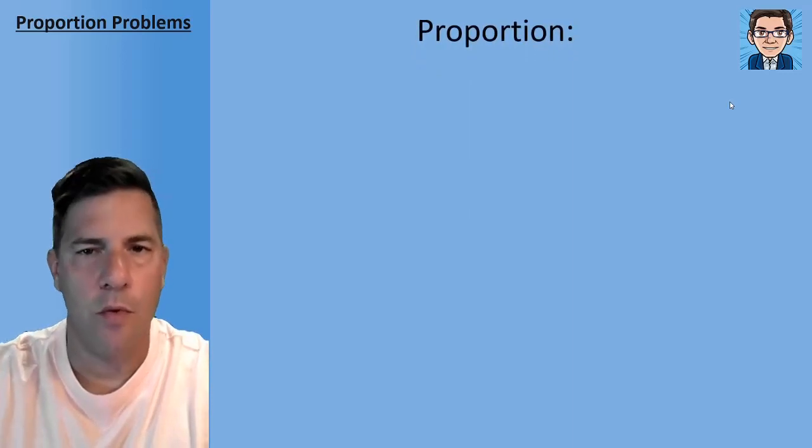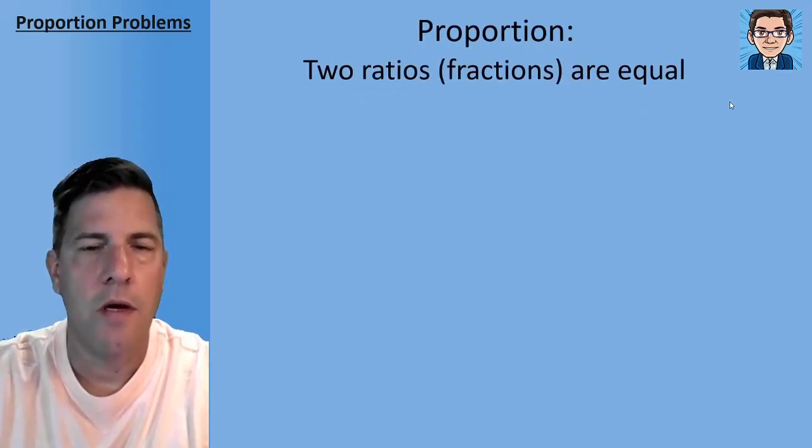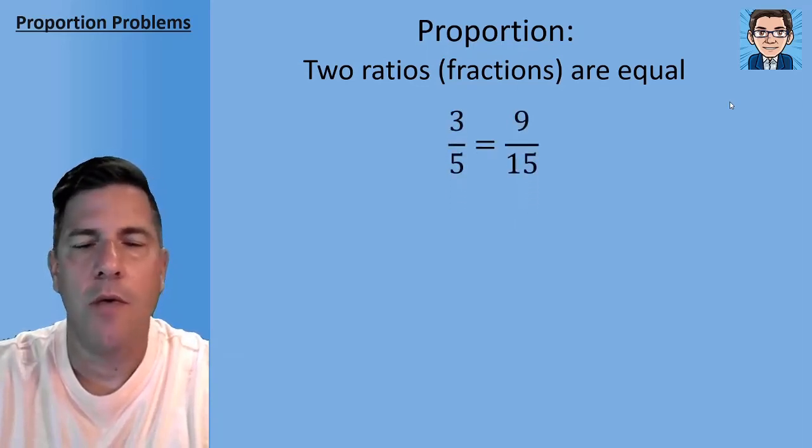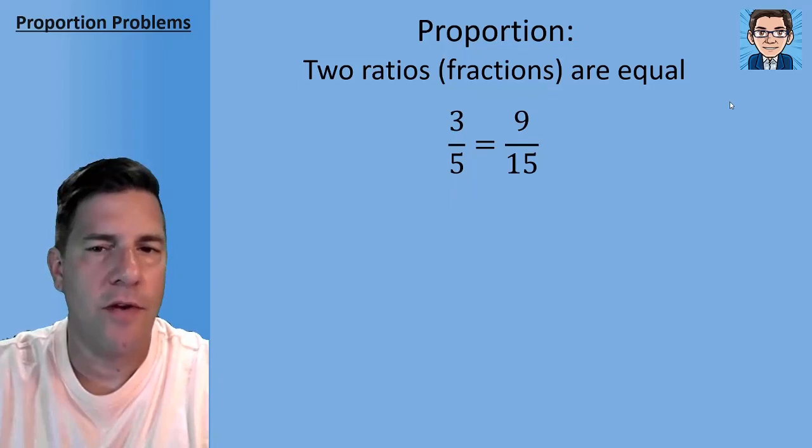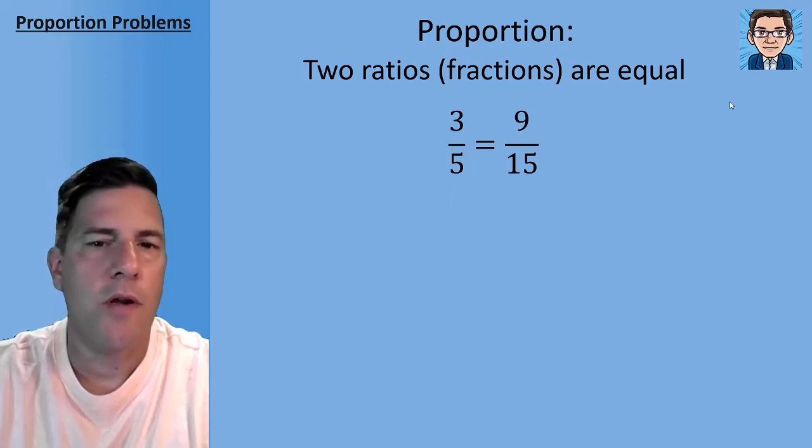Okay, so what is a proportion? A proportion is just two ratios or fractions that are equal to each other. So 3/5 equals 9/15. That's a proportion. Two fractions are equal. You can see that the fraction on the right is just three times on the numerator and three times on the denominator.